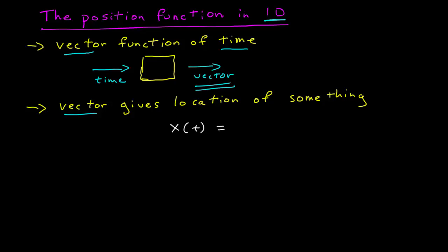I have a function x(t) given by 20 minus 10t and my position here is in units of meters. So here's a mathematical representation of a position function in one dimension. Let's look at it in a different representation.